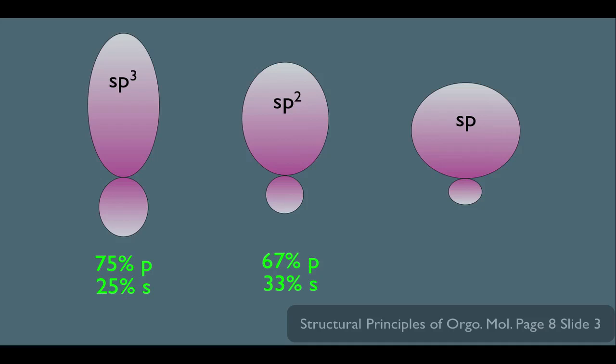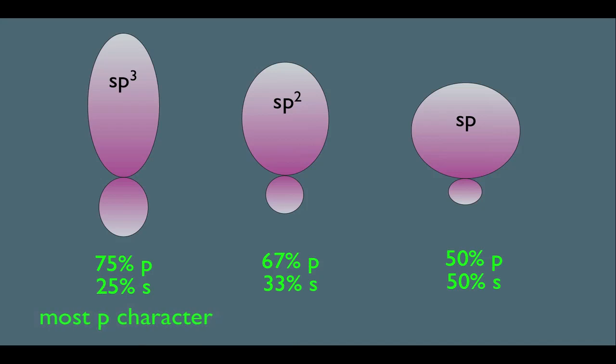And lastly, the sp hybridized orbital of course is half s and half p. So in summary, the sp3 hybridized orbital has the most p character and the sp hybridized orbital has the most s character, which is why he's the shortest and most blunted out of the three hybridized orbitals.